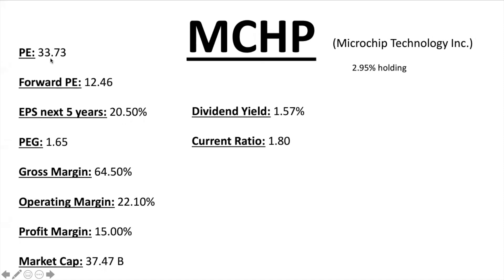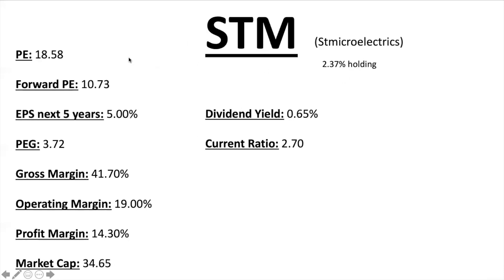Microchip Technology is another one of my favorites with just under 3% holding in the ETF. PE ratio 33.73, Forward PE 12.46, EPS next five years 20.50% — PEG ratio 1.65. A little overvalued now but people are buying it now for those future earnings — similar to how I'm buying Lam Research and Micron. Profit margin a little low under 20% at 15.00%, but still solid. Market cap $37.47 billion, dividend 1.57%, current ratio 1.8 — more assets than liabilities.